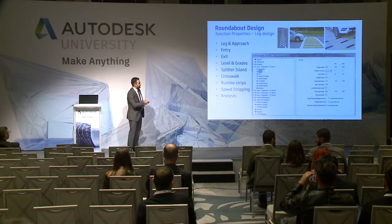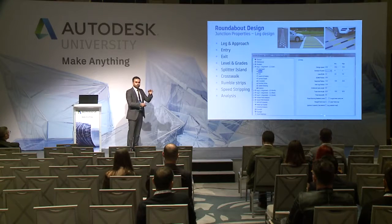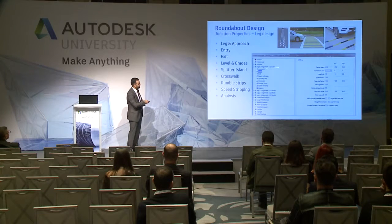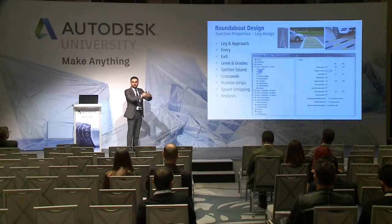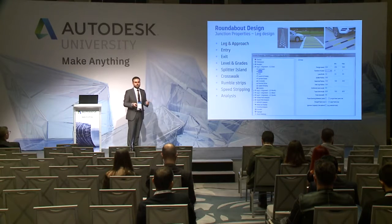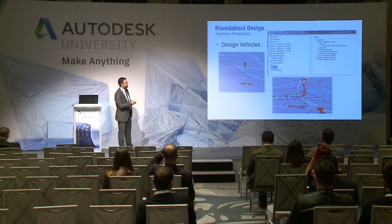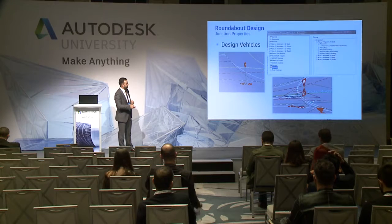Here I'm showing the extensive list of objects. Whenever you create a roundabout and sketch it very quickly, you have this extensive list, and each and every object has its own parametric panel where you can modify it as per your design requirements. This is another screenshot showing sign boards placed in 3D and the required road markings.